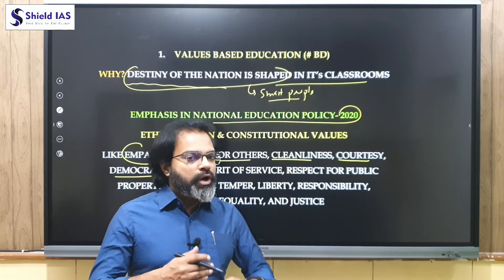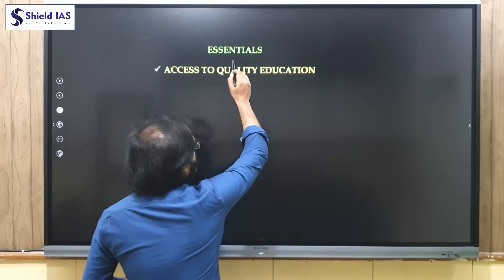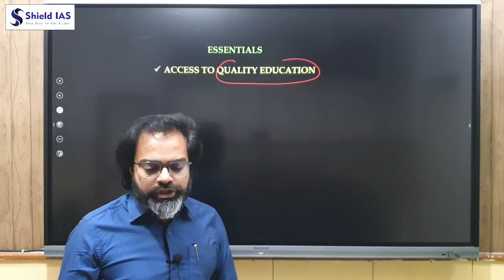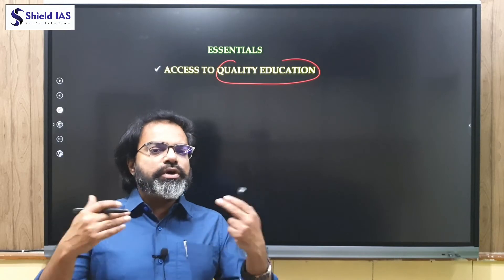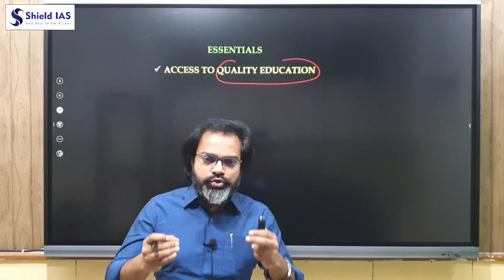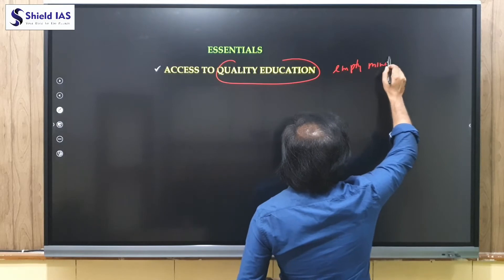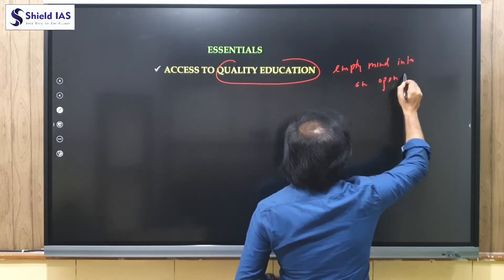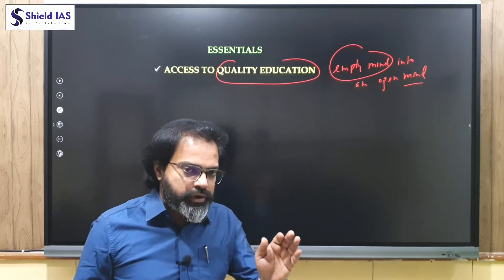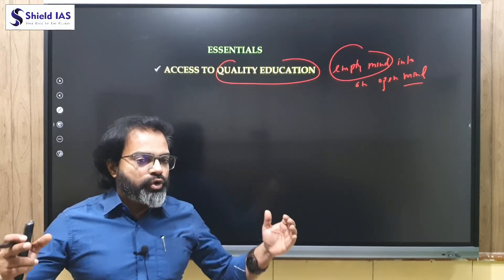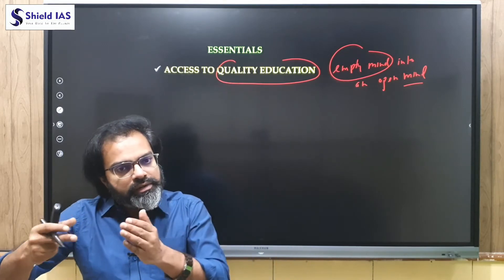What are the essentials and how do we plan this? The first essential is access to quality education. Education should not be confined to just marks, degrees, and certificates — it should be quality education. The meaning of quality education is to convert an empty mind into an open mind. We are all born as empty minds, and quality education should convert that empty mind into an open-minded person displaying maturity, logic, critical analysis, wisdom, and values.